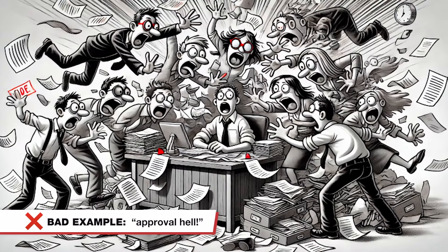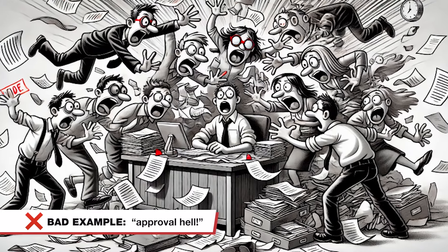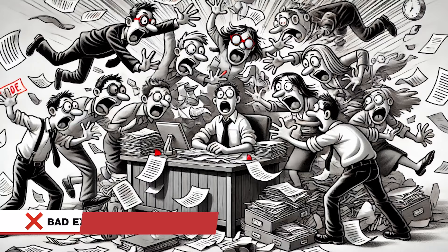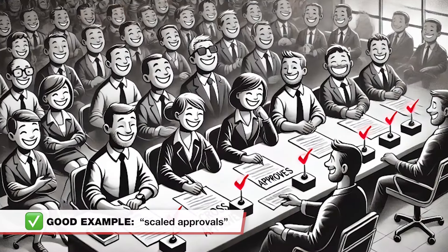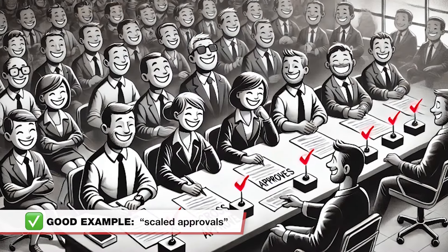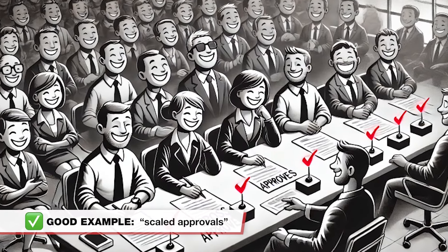Cross Approvals involve distributing authority to several subject matter experts, instead of only the original approver. Let's look at a bad example. In this case, there's a sole approver of everything. A better example might look like this — there's eight people and any two of them can approve.